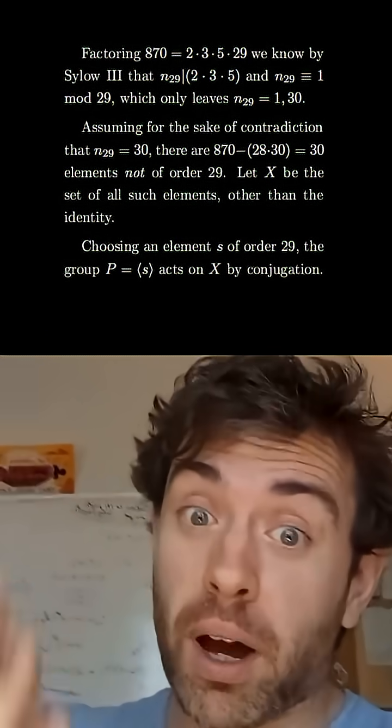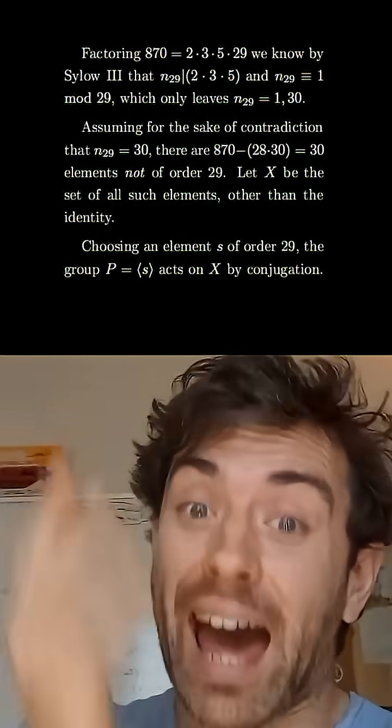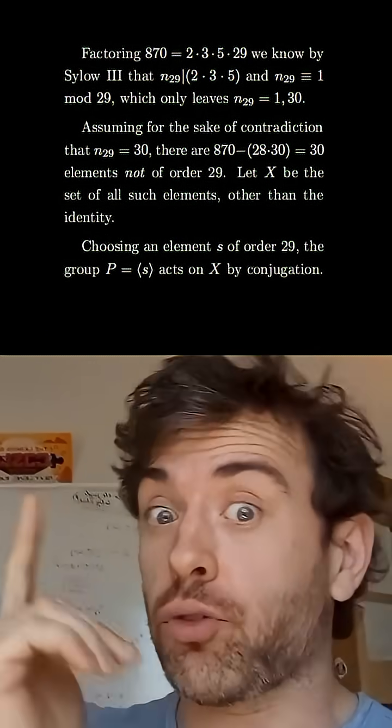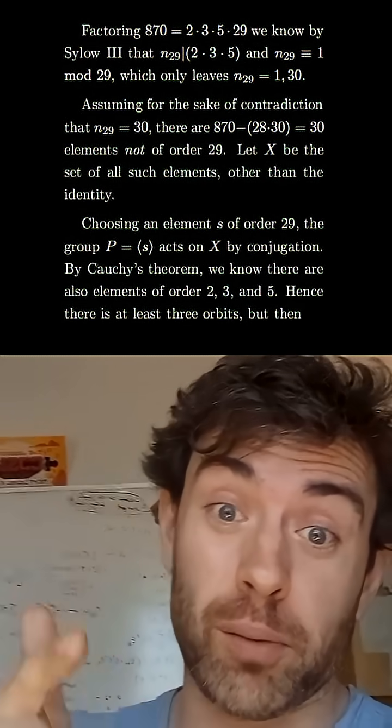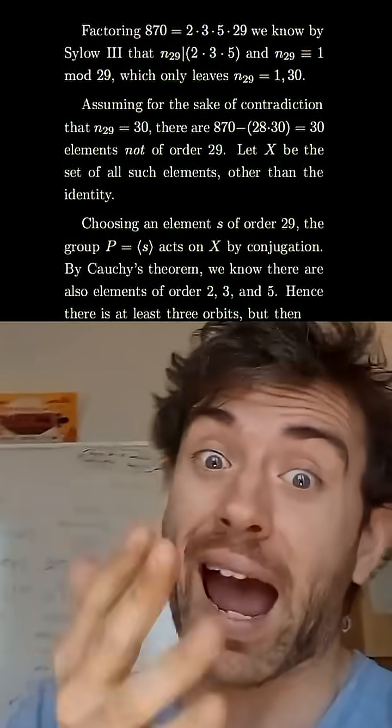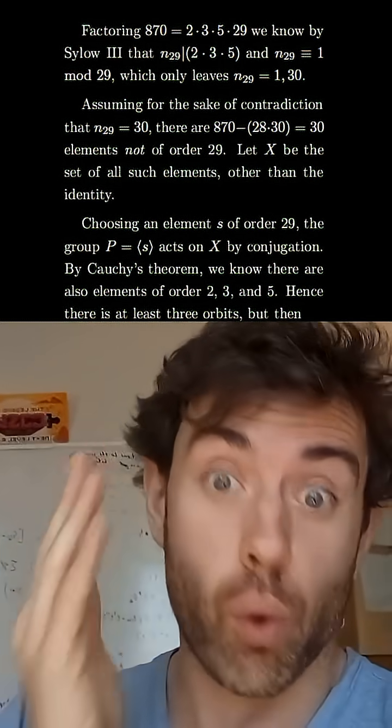The cyclic group generated by that element of order 29 acts on the set X. Now order is preserved by conjugation, and Cauchy's theorem also tells us that we have elements of order 2, 3, and 5. So there has to be at least three orbits.